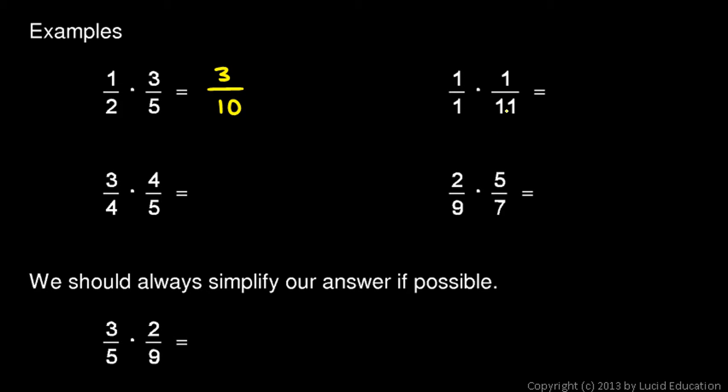Over here, this one's really easy. 1 times 1 is 1. And 1 times 11 is 11. Just multiply the numerators and multiply the denominators. And you could also get this another way. You know that 1 over 1 is just equal to 1. And 1 times anything is just that thing. So we end up with 1 elevenths.